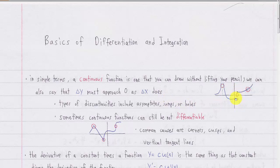For example, if the dot was filled in on the bottom instead of on the top at this point, and you were looking at the limit of delta y over delta x at this point, x plus delta x would be somewhere over here. As delta x approaches zero, moving to the left, delta y would not approach zero — delta y would approach whatever the height difference is between these two points. So this function is not continuous at this point.